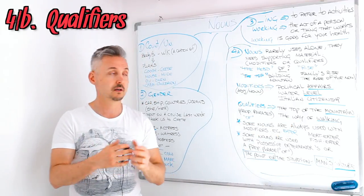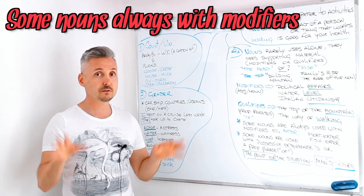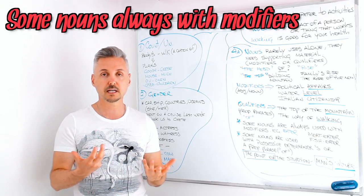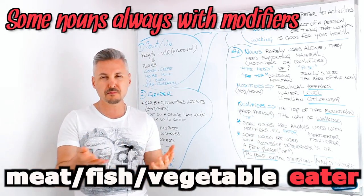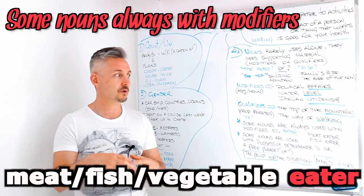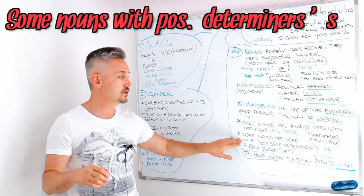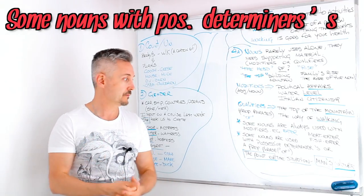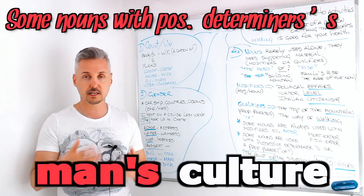Some nouns are always used with modifiers. For example, 'eater' — if I say just 'eater,' we need something else: 'meat eater,' 'fish eater,' or 'vegetable eater.' Everybody eats, so 'eater' alone doesn't give you the whole meaning. You need a modifier. Some nouns are also used with a possessive determiner (apostrophe-s) or a prepositional phrase with 'of' — for example, 'the point of the situation' or 'man's culture.'